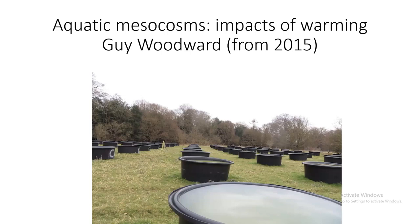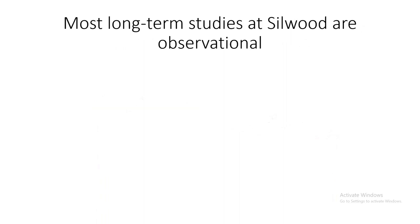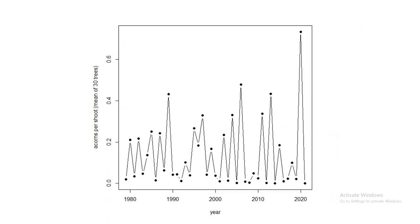Most of Silwood's long-term work is observational rather than experimental. The first of the longest and most interesting time series involves Quercus robur and its herbivores. A graph shows the number of acorns per shoot averaged over 30 oak trees from 1979 to the present. Acorns are produced roughly on a two-year cycle with occasional phase shifts, and the variance in acorn crop is clearly increasing. Last year was the lowest acorn crop ever recorded, while 2020 was by far the biggest.